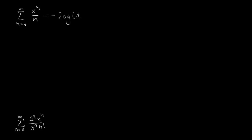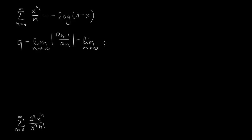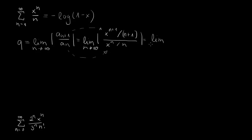Now let's look at the second sum. This series represents minus the logarithm of (1 − x). Let's apply the ratio test again: Q equals the limit as n→∞ of |a_(n+1) / a_n|. Plugging in, we get x^(n+1) / (n+1) over x^n / n.